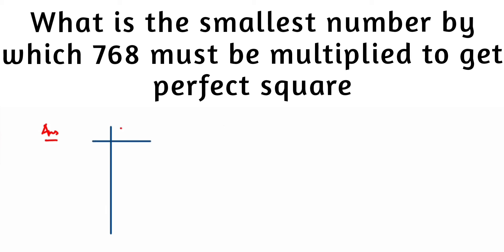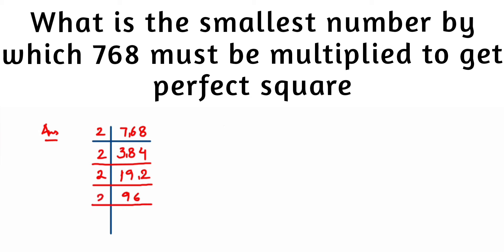We start with 768 and divide by 2 repeatedly since it's an even number. Dividing: 768 ÷ 2 = 384, 384 ÷ 2 = 192, 192 ÷ 2 = 96, 96 ÷ 2 = 48, 48 ÷ 2 = 24.